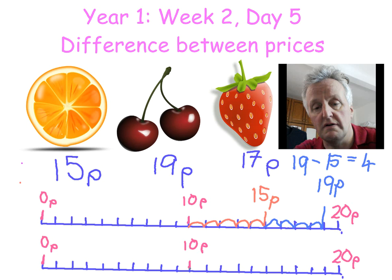So how much was the jump this time? It was two jumps. So we could say 17p minus 15p equals 2p. Now you can look at your worksheet and solve the other questions. Don't forget to subscribe, and have a great day! Bye.